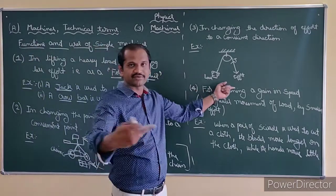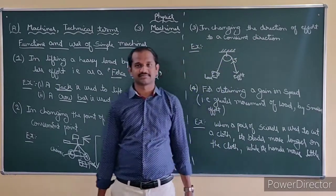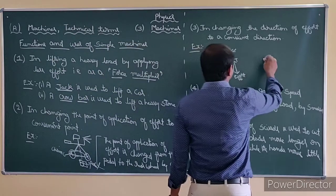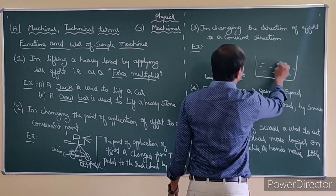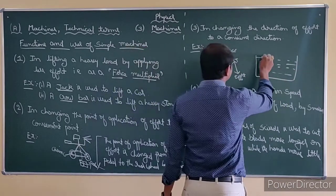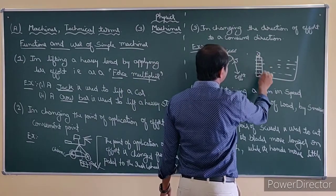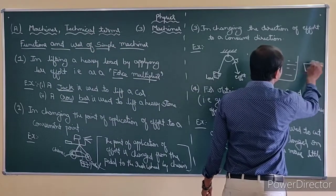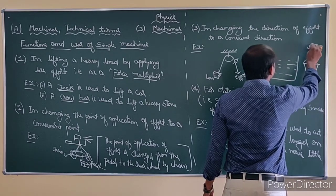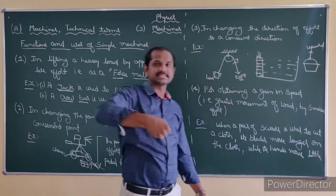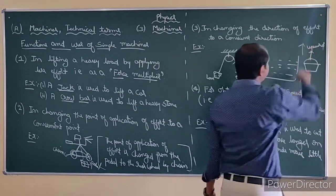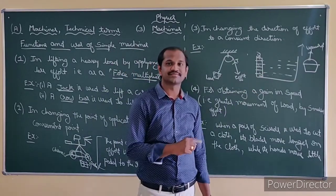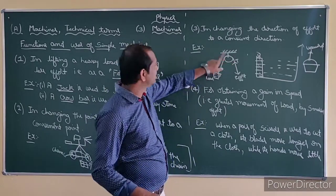The third function: changing the direction of effort to a convenient direction. We are changing the direction of effort itself. For example, consider a well with water. To take a bucket of water from the well, you would lift the bucket in the upward direction — you are applying force upwards, doing work against the force of gravity. But other than this, what can we use? We can use a single fixed pulley.